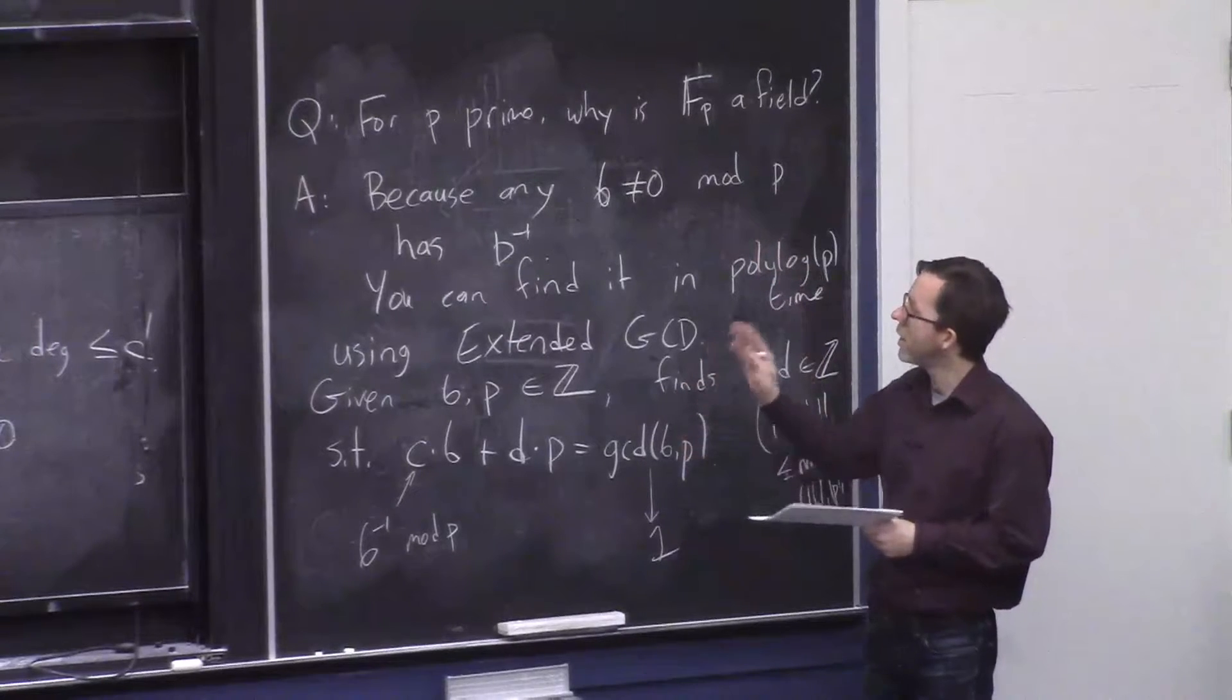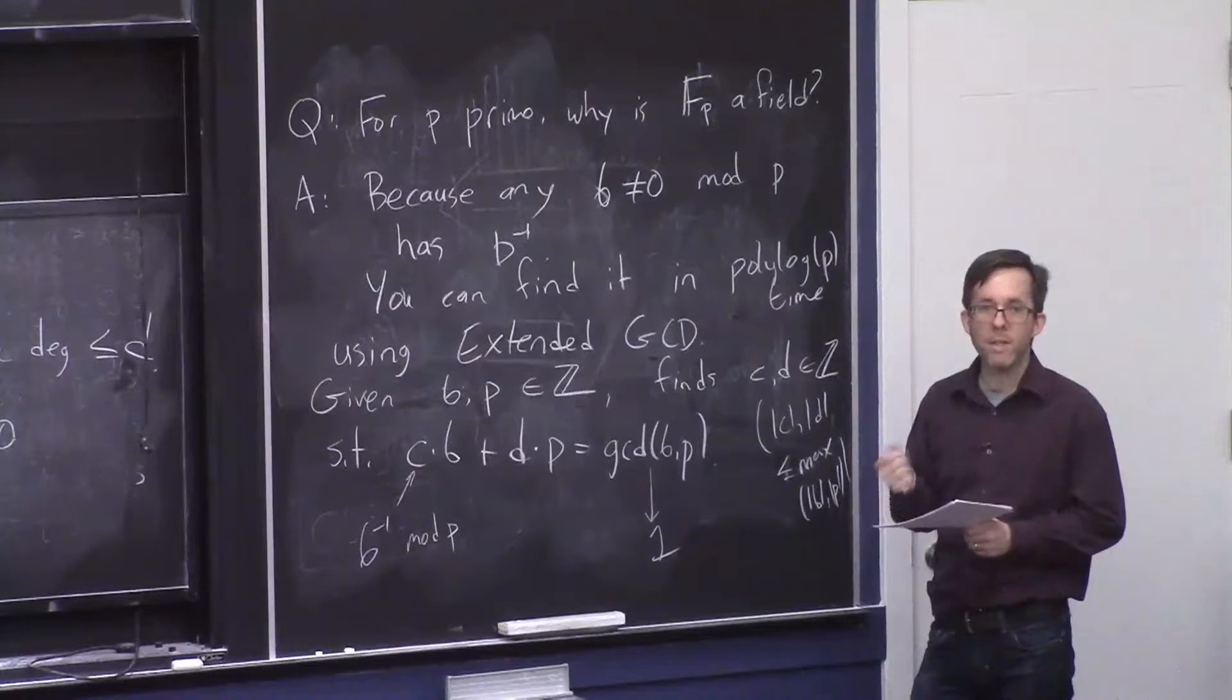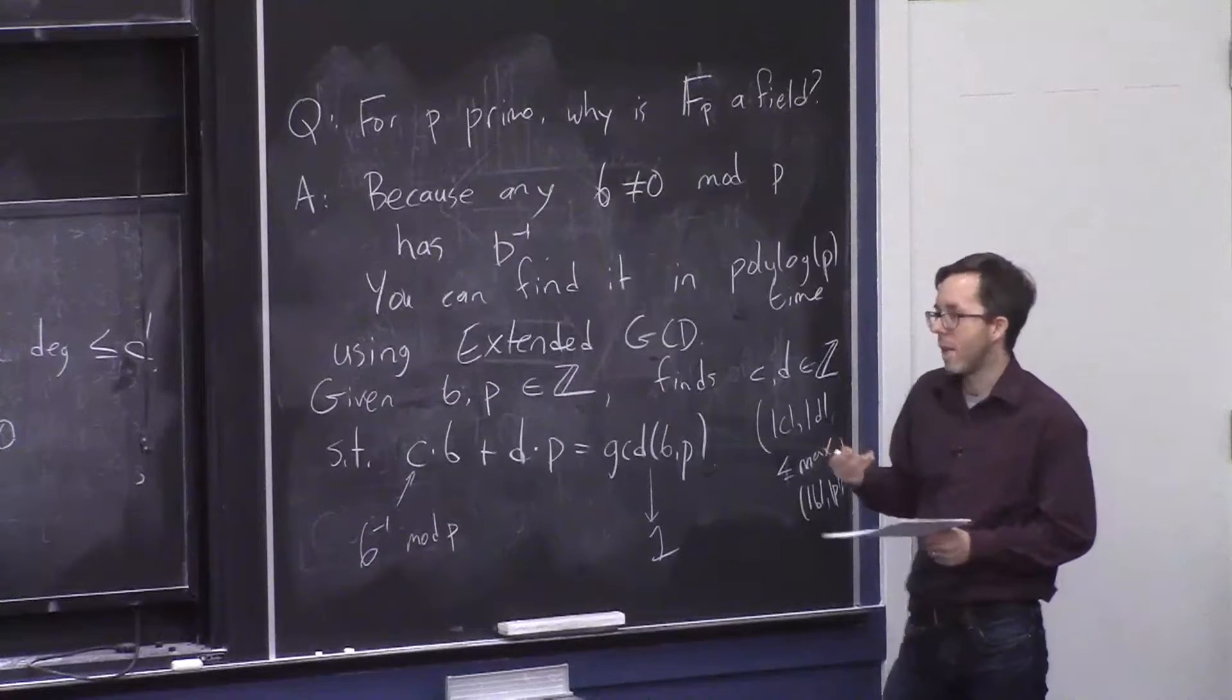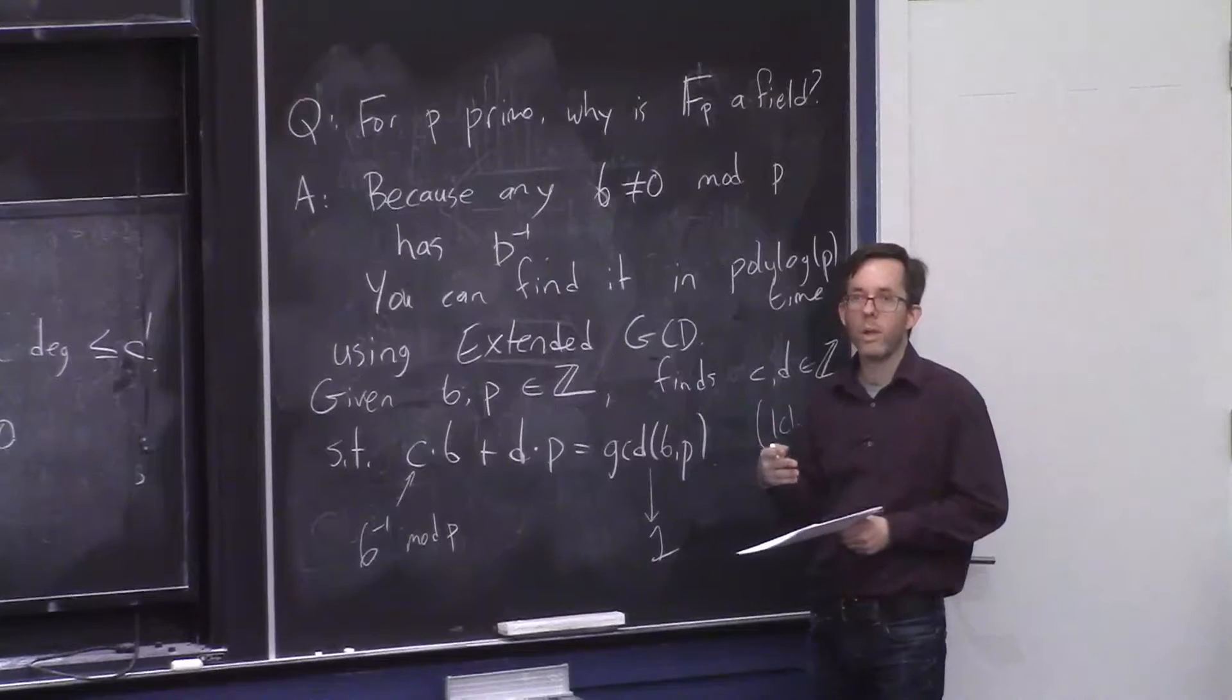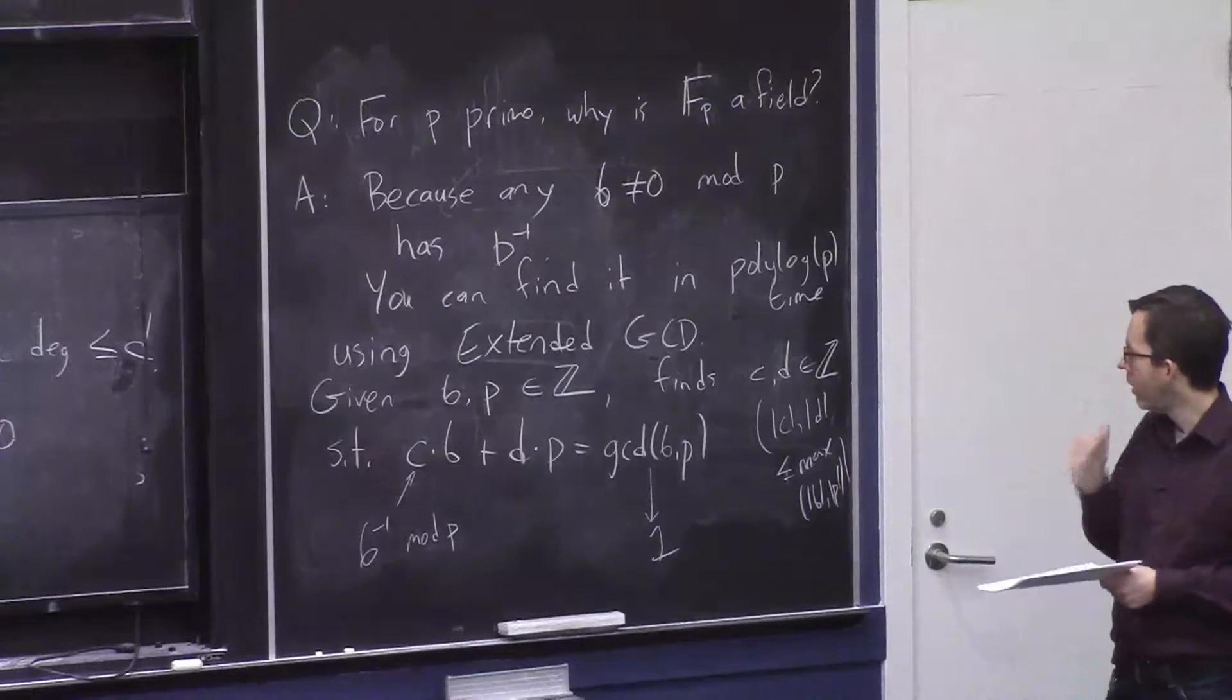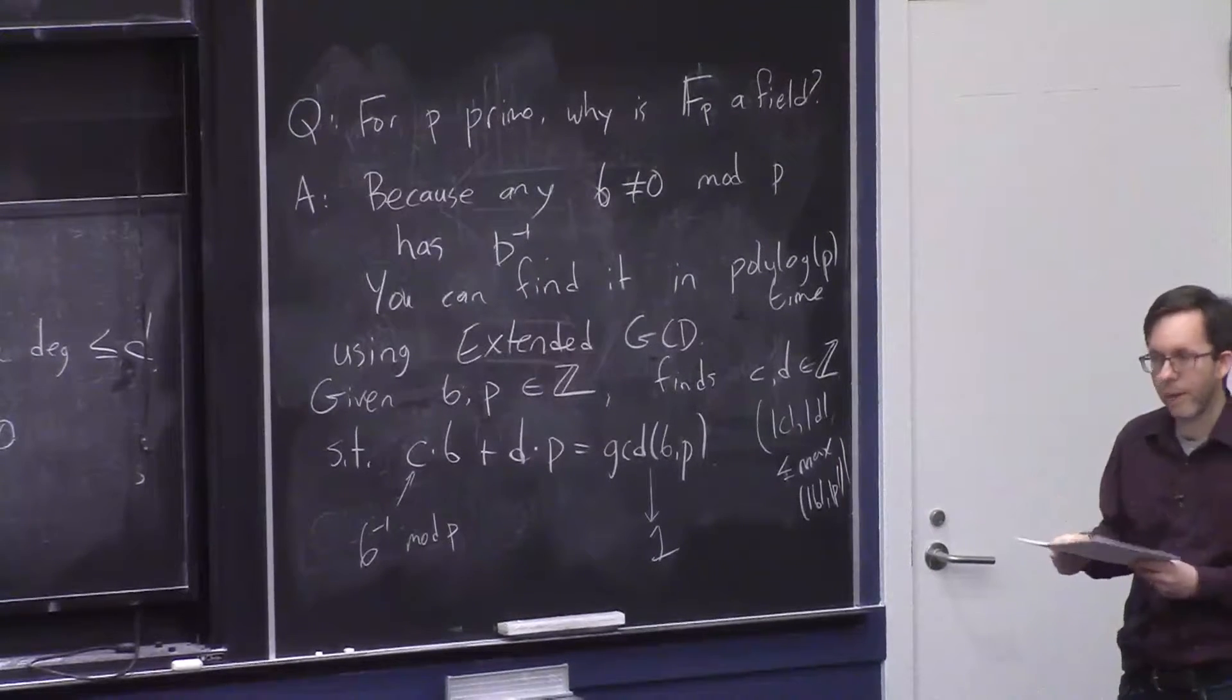And also, if you think about this a little bit longer, you can see why if you take the integers mod m, where m is not a prime, it's not a field. And it's because the numbers that make a GCD with m that's not 1 will be zero divisors. They won't have a reciprocal mod m.